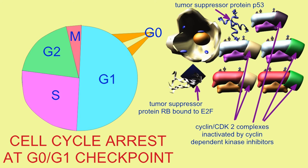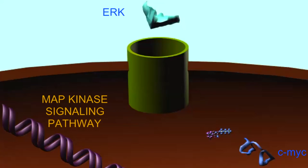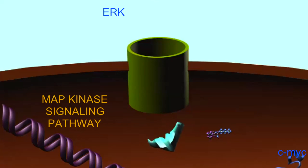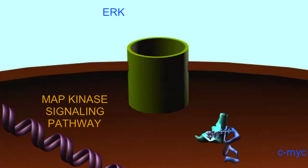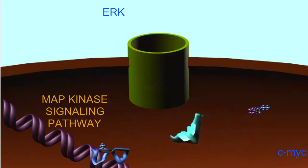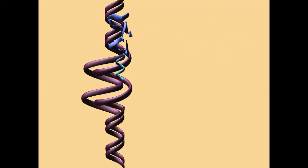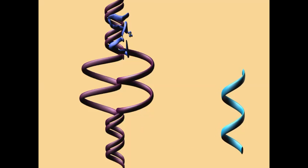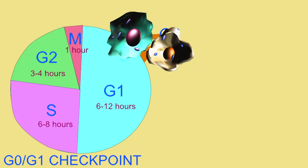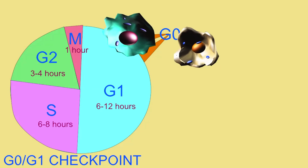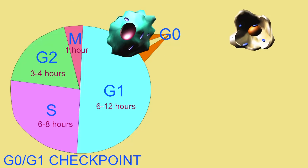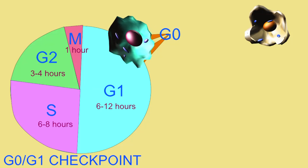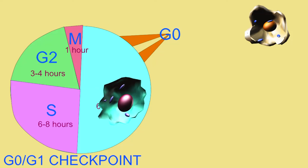There are many more proteins involved in the progression of the cell cycle in active cells as well. For example, the transcription factor CMYC, which is often stimulated as a result of the MAP kinase pathways, would both increase the production of the cyclins — which would promote the passage through this checkpoint — and decrease the production of the cyclin-dependent kinase inhibitors, which would block a cell's progression through this checkpoint.